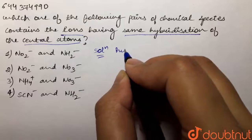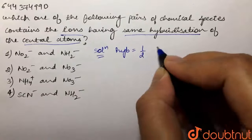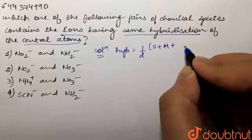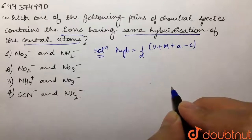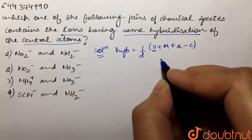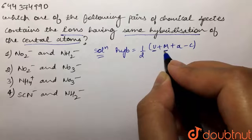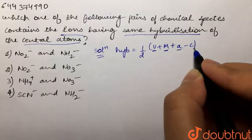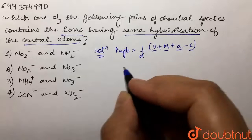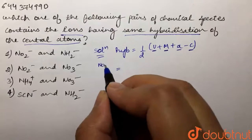Hybridization is calculated using the formula: half of (V + M + charge) if it's an anion, or minus the charge if it's a cation. Here V is the number of valence electrons of the central atom, and M is the number of monovalent atoms attached to it.